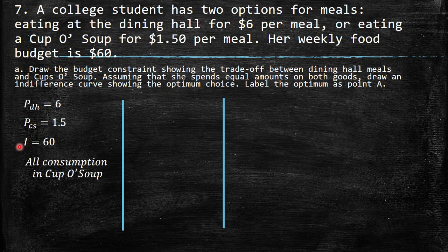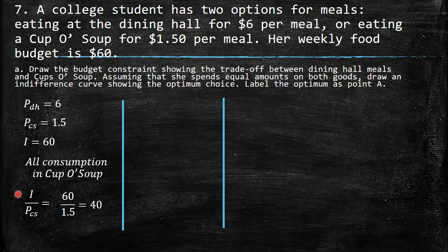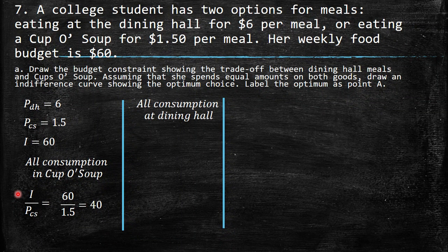In order to understand the situation better, we are going to imagine that all consumption is in soup. So all your income over the price of the soup gives you the quantity you can consume of that good. So $60 over $1.50 gives us 40. It means that if you spent all your money in soup, you can buy 40 soups. Now imagine you eat only at the dining hall: $60 over $6 means you can eat 10 times at the dining hall.